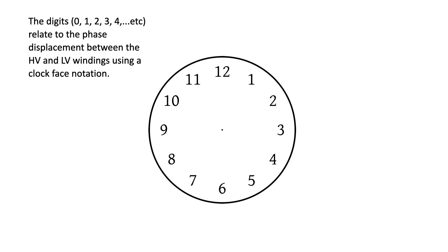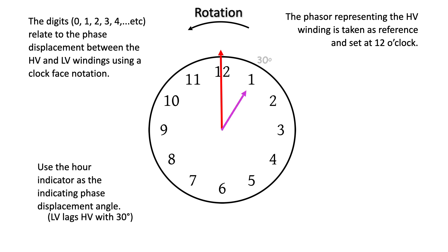The phasor representing the high voltage winding is taken as a reference and set at 12 o'clock. It is assumed that the phasors are rotating in a counterclockwise rotation. We use the hour indicator as the indicating phase displacement angle. Low voltage lags the high voltage by 30 degrees in this instance.